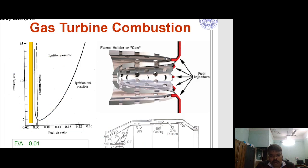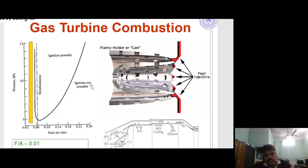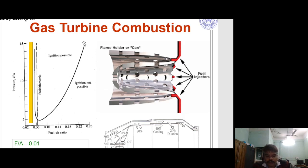Gas turbine combustion involves the fuel injector. This graph shows the relationship between pressure and fuel-air ratio. Ignition is possible within a certain range, and ignition is not possible if the fuel-air ratio exceeds that value.